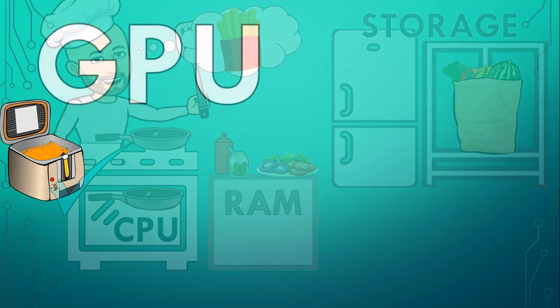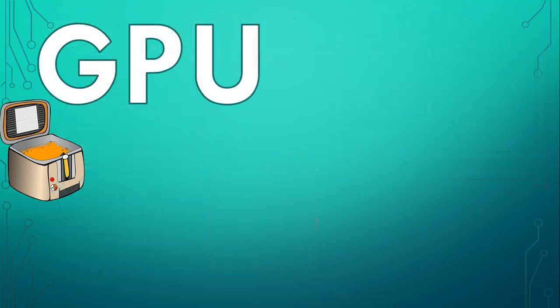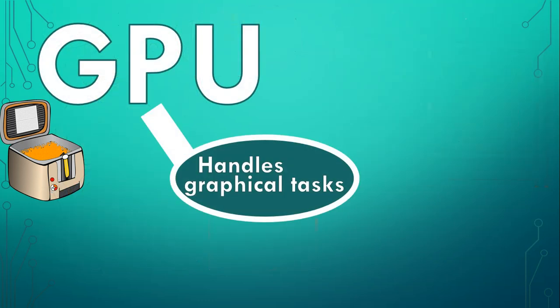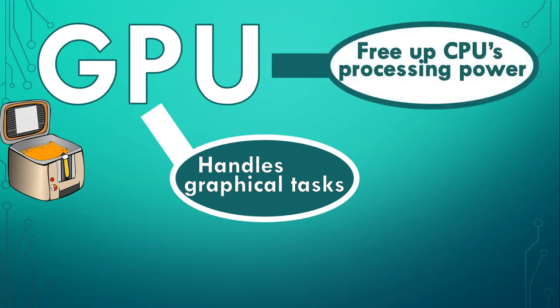The deep fryer is like the GPU — it handles the very specific task of graphics. Sure, your CPU can handle these tasks, but with a GPU, not only does this free up processing power for the CPU to do other tasks, but the GPU is really good at managing those graphical tasks.